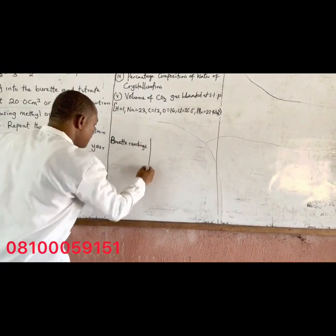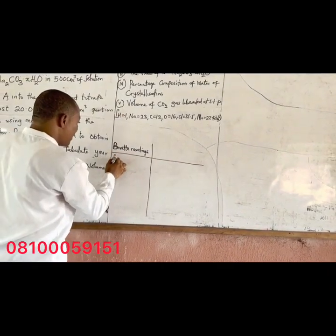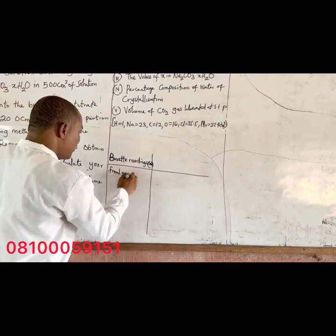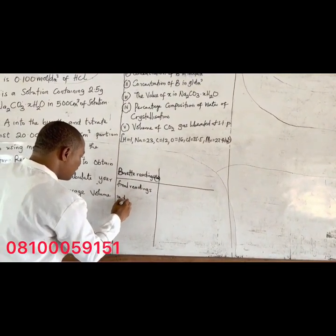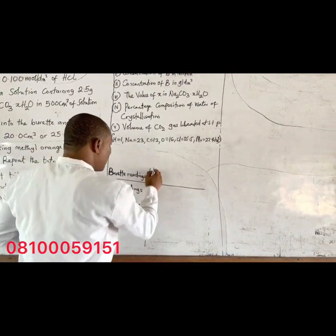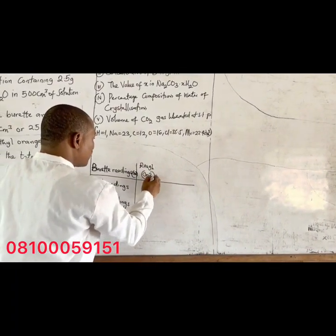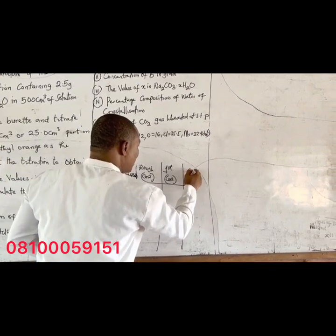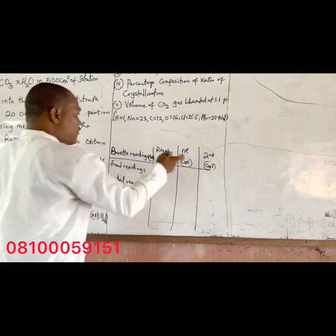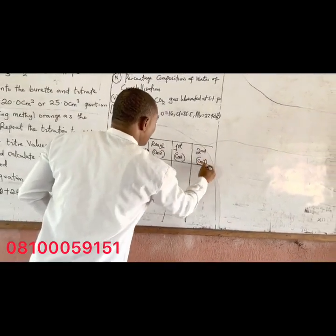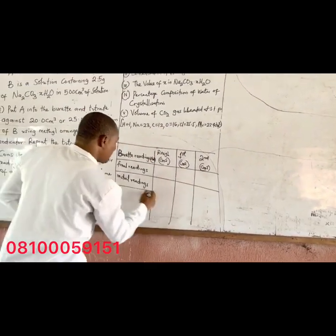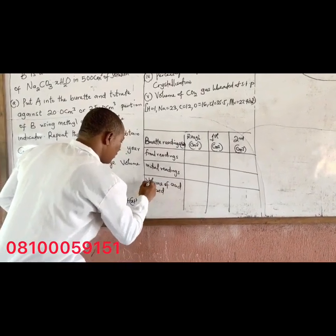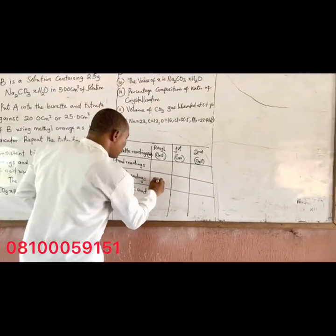Let me have a table. Burette readings — I have my final readings. Please, the unit is very important. This will be my final readings. This will be my initial readings. This is going to be my rough, first, and second in centimetre cubes. I'll do two concordant readings because of time. I'll have volume of acid used. My initial reading is 0.00 — that's where I'll be starting my titration from.